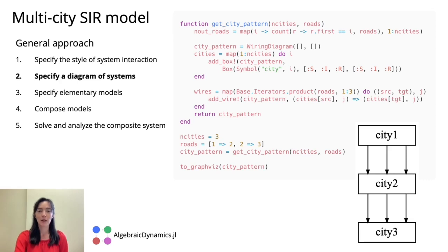Here we specify a wiring diagram with three boxes corresponding to city one, city two, and city three, and wires corresponding to the flow of people between cities. We both specify and visualize the wiring diagram using the Catlab package in Algebraic Julia.